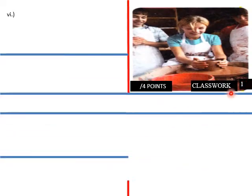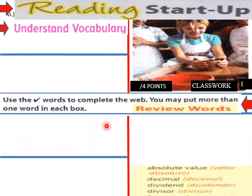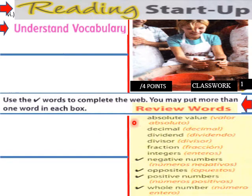Classwork, page 1. Reading startup. Understanding vocabulary. Use the check words. Here's our vocabulary list right here. Whole number, positive opposites, negative numbers, integers, fraction, divisor, dividend, decimal, and absolute value.